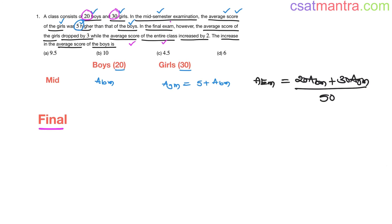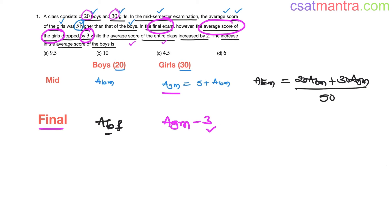In the final exam, the average score of the girls dropped by 3. Earlier it was AGM; now it will be AGM minus 3. The average score of boys in the final examination is not given, so let's assume it as ABF. This is what is being asked — the increase in the average score of boys from mid-semester to final examination, which is ABF minus ABM.